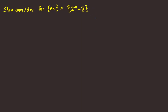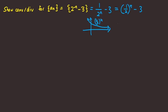For the sequence A_n = 2^(-n) - 3, the term 2^(-n) is just exponential decay. If you draw the graph, regular exponential decay goes down to 0, but since we have a minus 3 we can translate that down, so the limit as n goes to infinity should be negative 3.